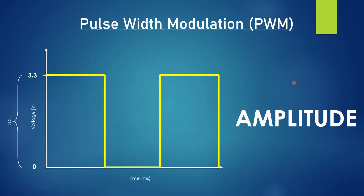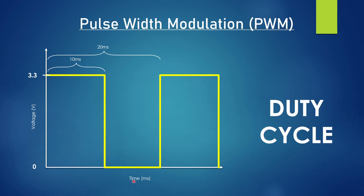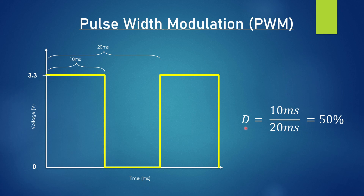Next we have to talk about amplitude. Amplitude is just the difference between the max and the minimum value of your pulse width modulation scheme. Here we can see that it's 3.3 volts, because 3.3 minus zero equals 3.3. Finally, we have duty cycle. Duty cycle is represented as a percentage — it represents what percentage of the period the signal is on and what percentage it is off. The duty cycle equals the time on over the time of the period: 10 milliseconds over 20 milliseconds, which is a 50% duty cycle.